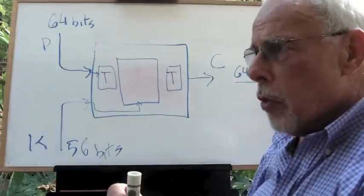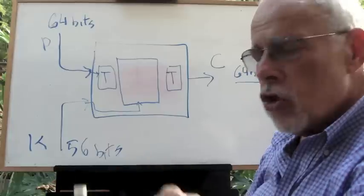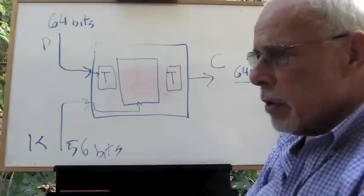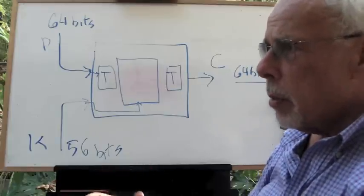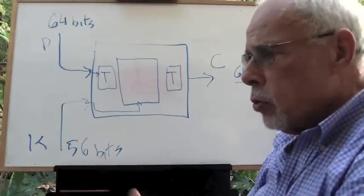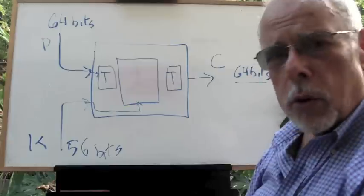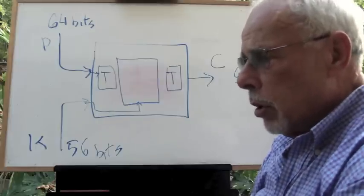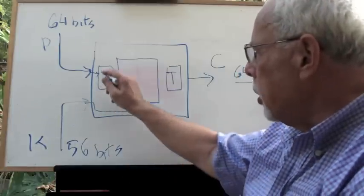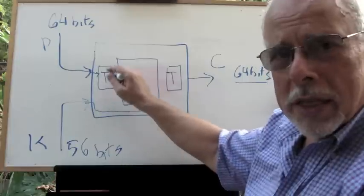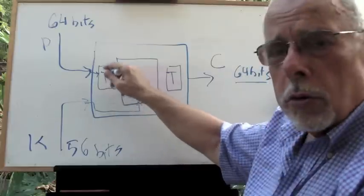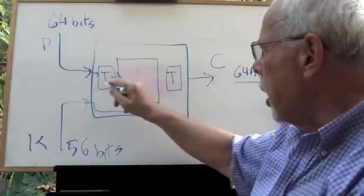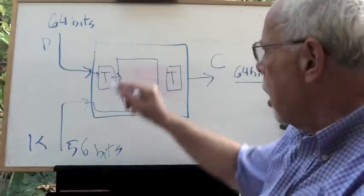So the 64 bits come here into a sub-module that simply changes the order of the bits. It says bit number 6, you go to place number 17, for example. Bit number 15, you go to location number 21. I don't remember the exact instructions, but they are well-defined, mixing the bits into a different order.